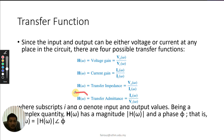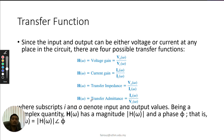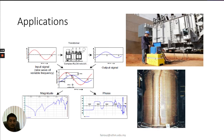H(ω), the transfer function, is a complex quantity. Therefore we can separate the frequency response into two plots: the magnitude plot and the phase plot. You can get the magnitude and the phase value from the transfer function, giving us two frequency response plots.